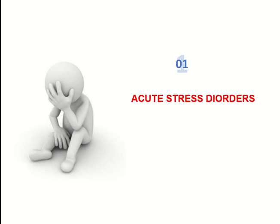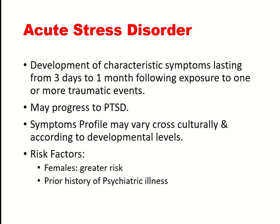Acute stress disorder is mainly distinguished from PTSD by the duration of symptoms. The characteristic symptoms begin within three days of exposure to one or more traumatic events and last for up to one month. Some patients with acute stress disorder may progress to post-traumatic stress disorder, but in many cases symptoms do remit within one month following the event. Symptom profiles vary cross-culturally; in countries like Pakistan and the subcontinent, we see much more dissociative and somatic symptoms compared to the West.